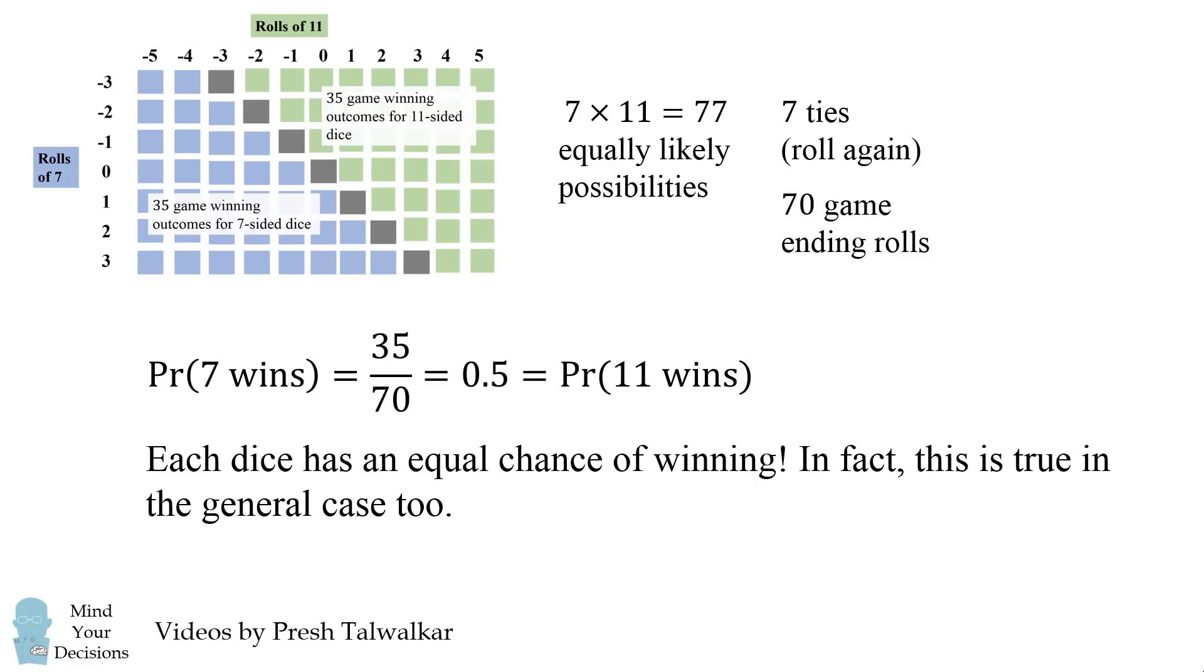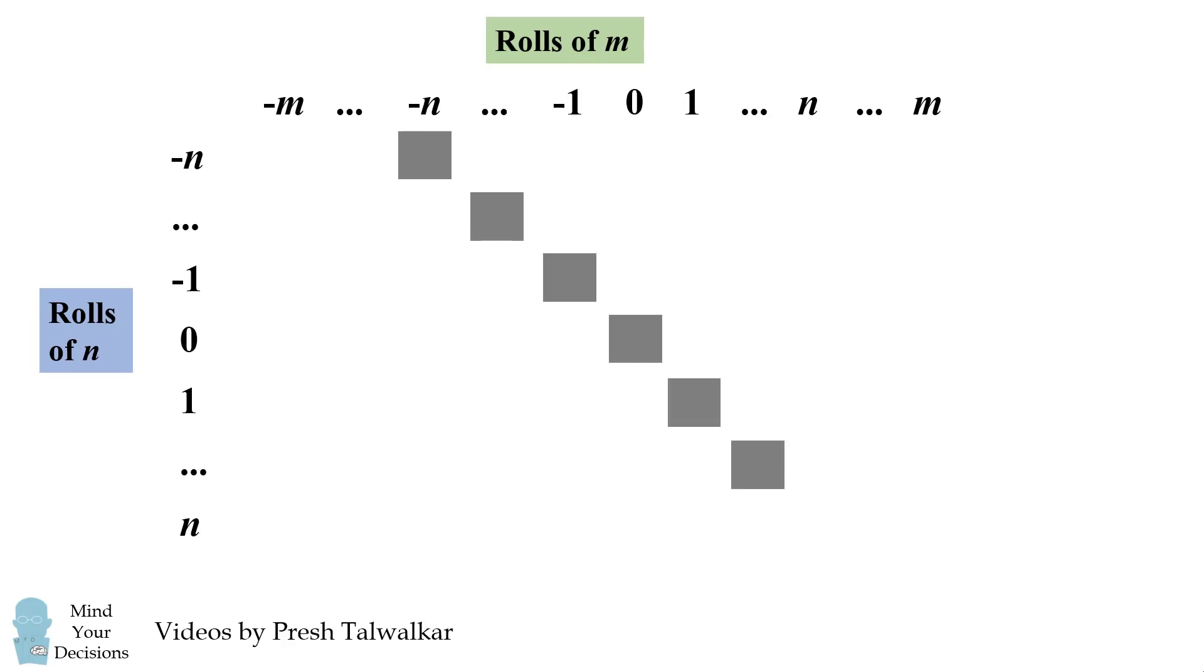This is true in the general case as well. We can imagine the same sort of table where we have the rolls of the n dice and the rolls of the m dice. Now if n is less than m, there will be n possibilities in which the two rolls are equal, and these will be re-rolls, and we'll exclude these possibilities.